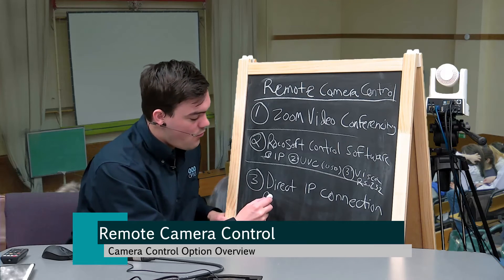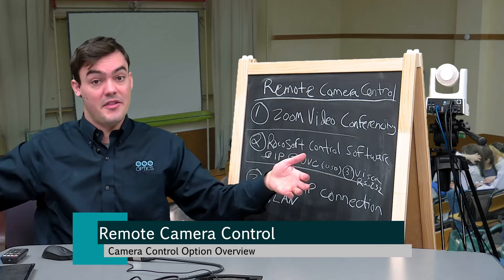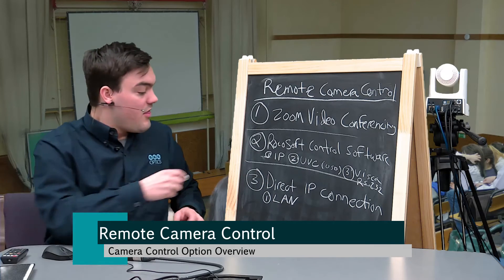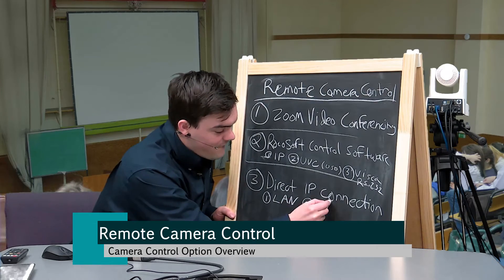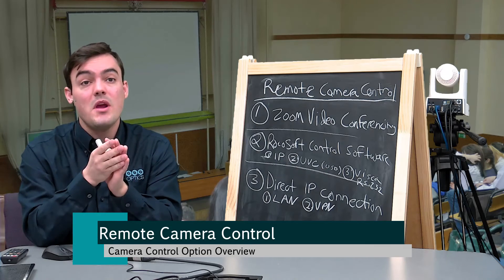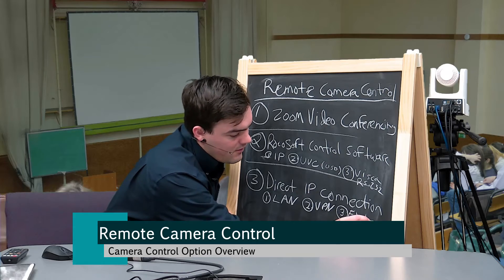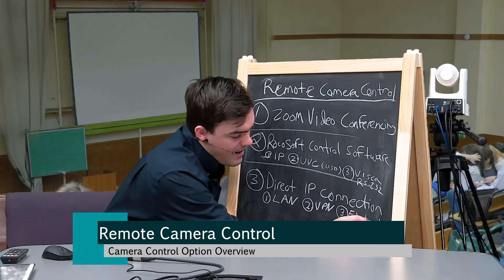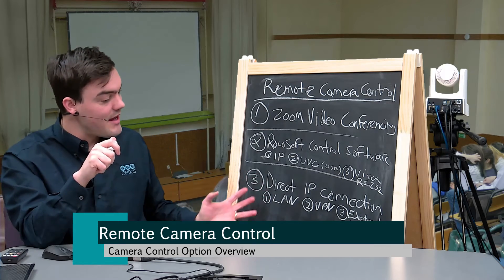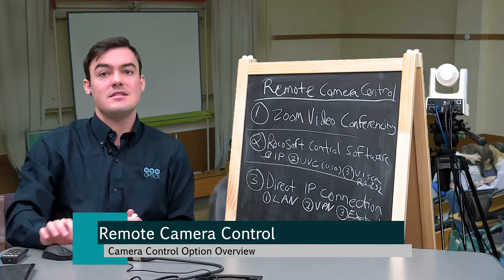The first sub-option is being on the LAN — the local area network. If your company has a LAN that spans the globe, you can just type in the camera's IP address and control it from another building or another country. The second option is a VPN — a virtual private network — if you're outside the local area network. The third option is creating an external IP address: you take an internal IP address and make it available to the outside world. Your cameras do have a username and password, so you'll need to talk to your IT department.